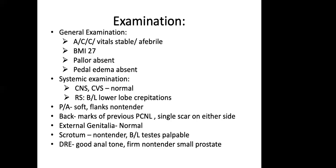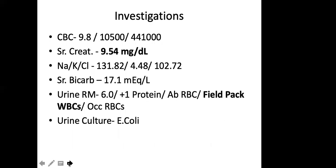How will you investigate? First, blood investigations — CBC, creatinine, blood sugar, electrolytes considering the repeated history of vomiting and fever, urine routine. His hemoglobin is 9.8, total count is 10,000, creatinine is 9.54, protein is 4.48, bicarb is 17. Urine is filled with pus cells, culture showing E. coli.